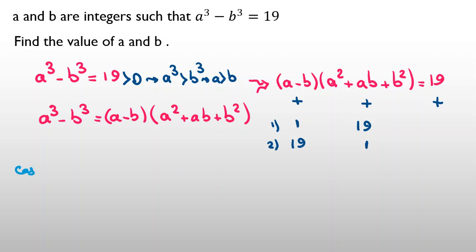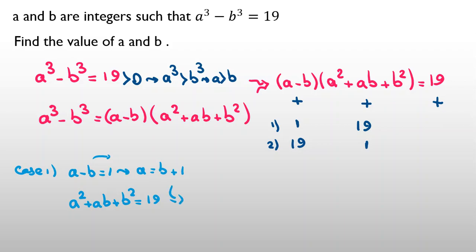Case 1: a minus b equals 1, and a² plus ab plus b² equals 19. Taking negative b to the right-hand side gives a equals b plus 1. Replacing a with b plus 1: (b plus 1)² plus (b plus 1)·b plus b² equals 19.